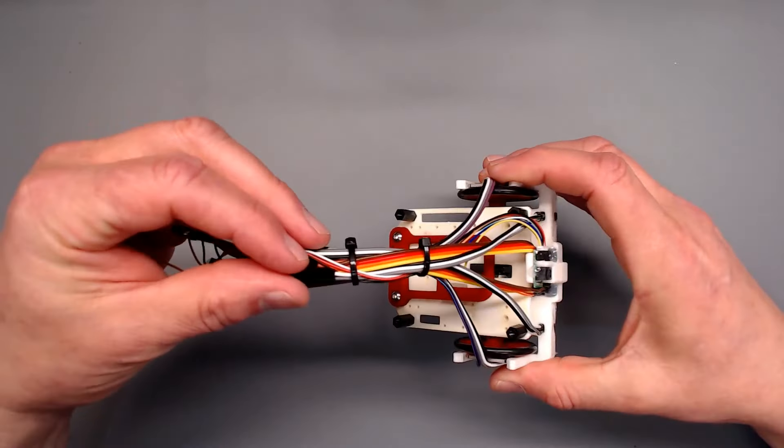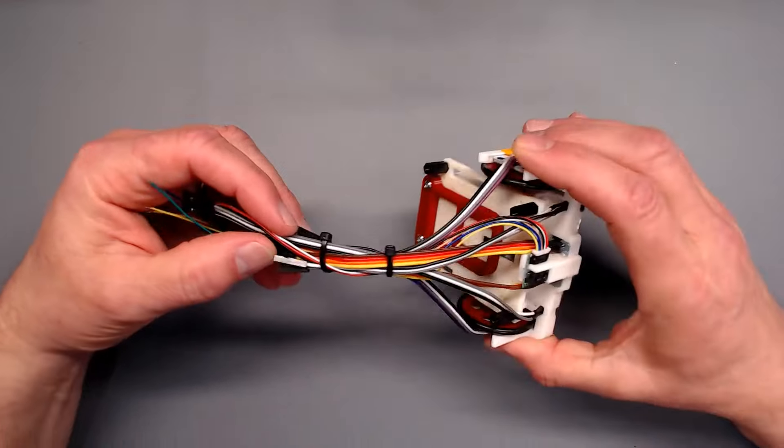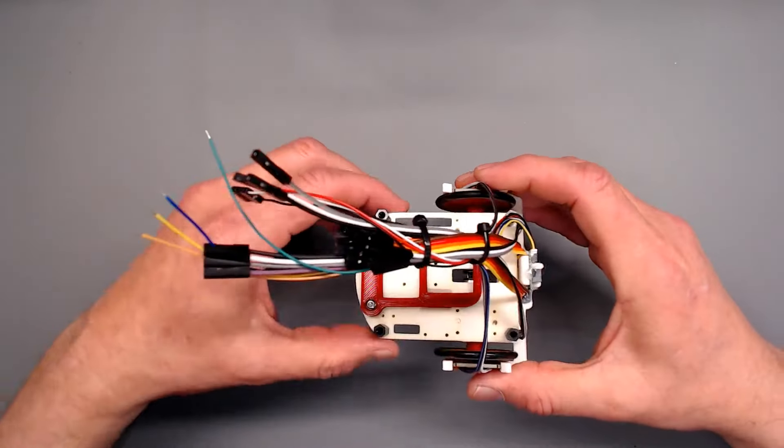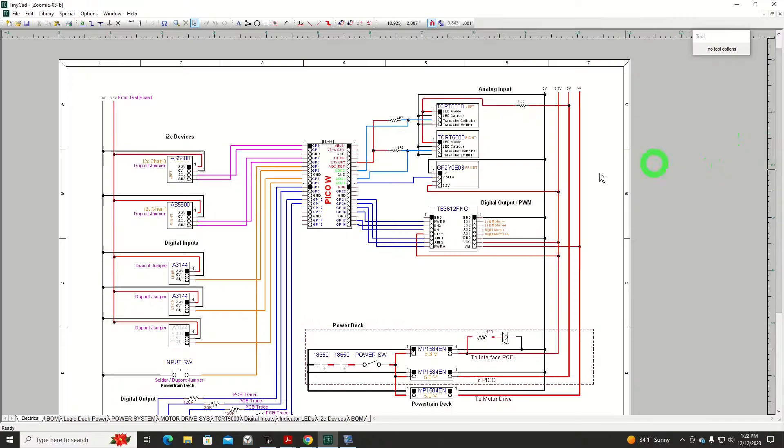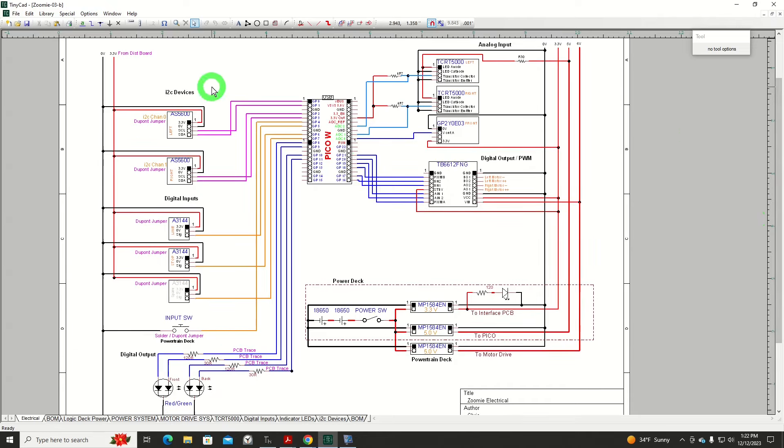All of that is run through wiring harnesses that ultimately will end up on the logic level board. To get an idea of what we've really covered so far relative to the overall schematic for the entire Zoomy, we've covered the I2C devices for the AS5600 rotor encoders. There's two of them.